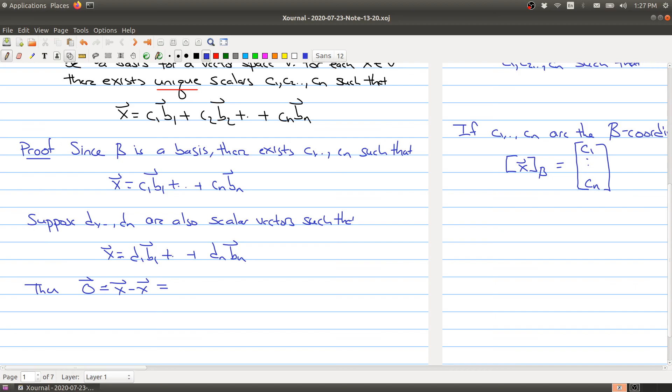And we have two different ways of writing the x. So let's write it in terms of the first way and subtract it in terms of the second way. And now let's regroup it. So we collect all the scalars for each basis element. So we have c1 minus d1 times the vector b1 all the way up to cn minus dn times the vector bn.